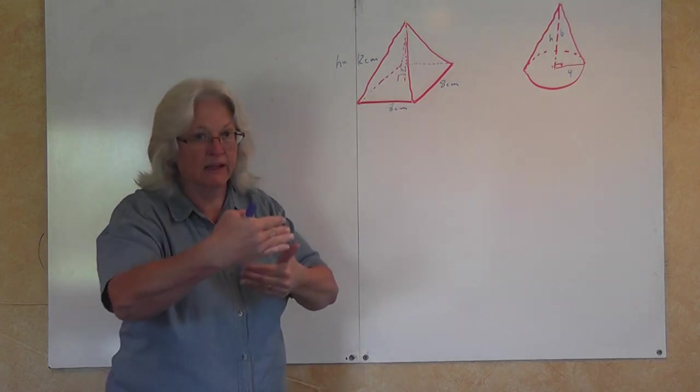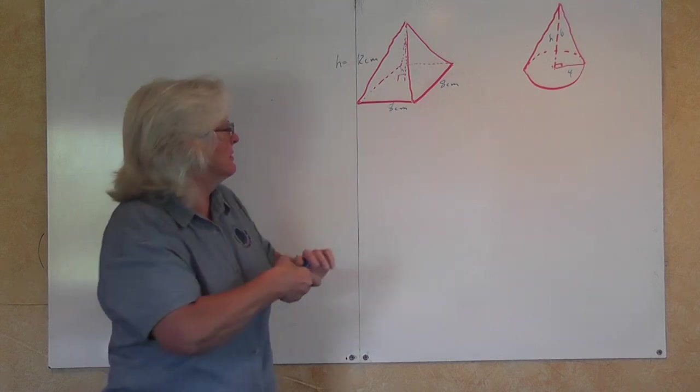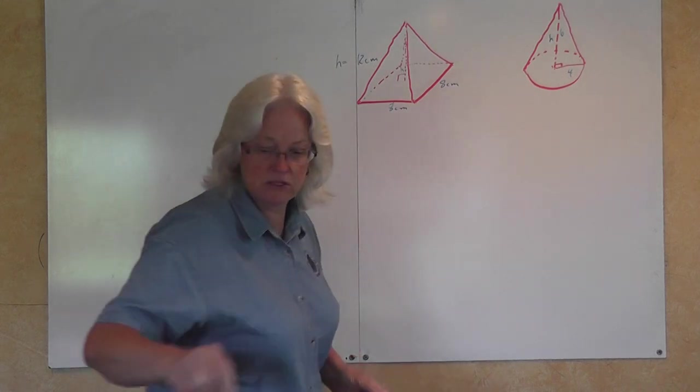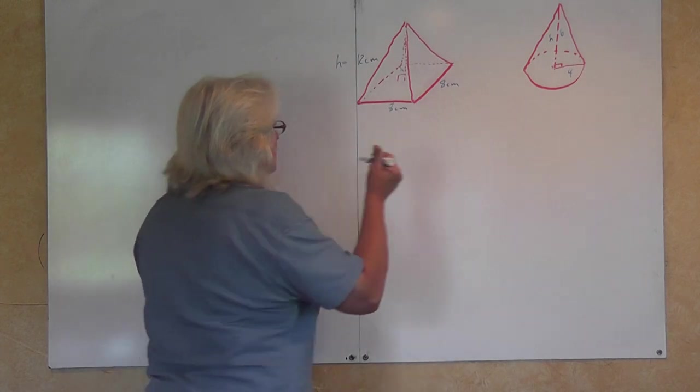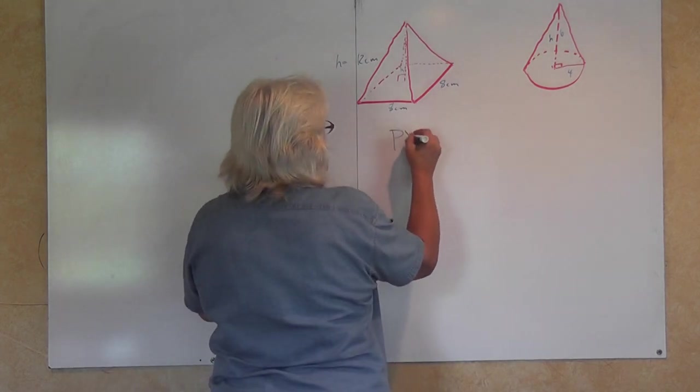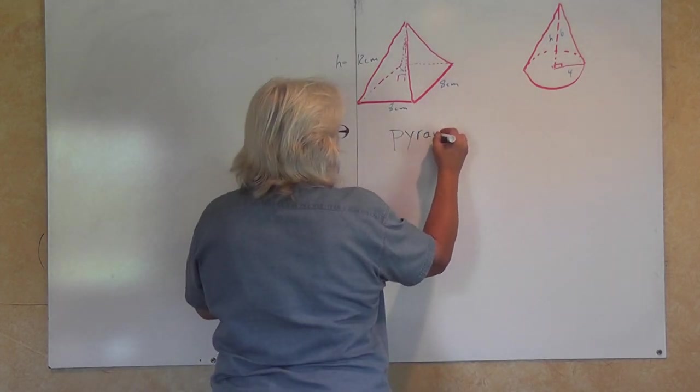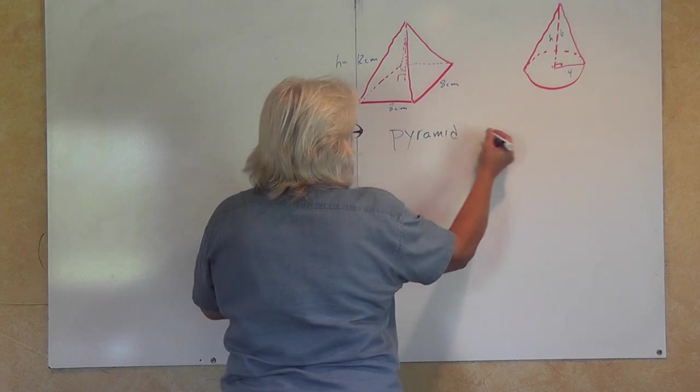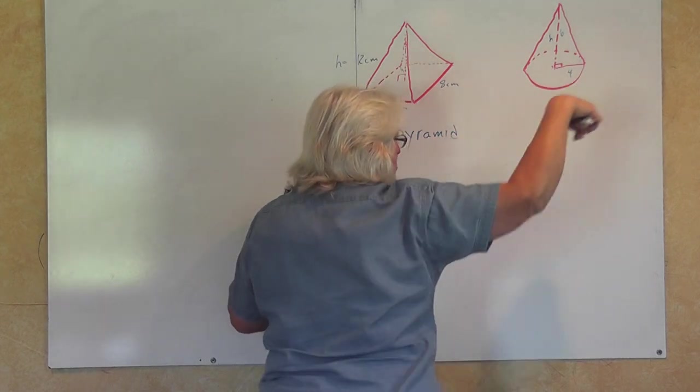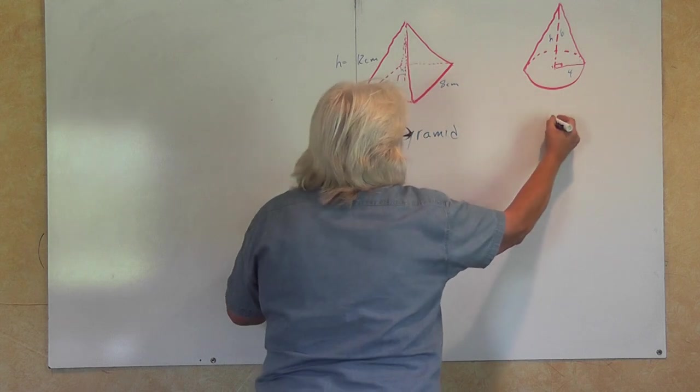I called it a cone. It's a straight sided cone, but it's technically called a pyramid. Let me write this down so that you will remember this. This is a pyramid. It has straight sides. A cone has a surface, a lateral surface going around it.